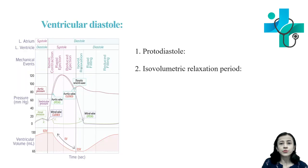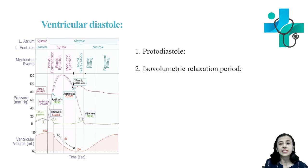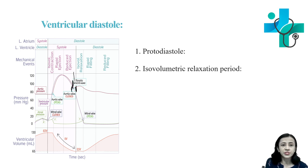Then comes protodiastole — before the isovolumetric relaxation period. The ventricles start relaxing and therefore intraventricular pressure decreases. The semilunar valves close when intraventricular pressure becomes less than aortic and pulmonary pressure. During protodiastole, intraventricular pressure starts falling.